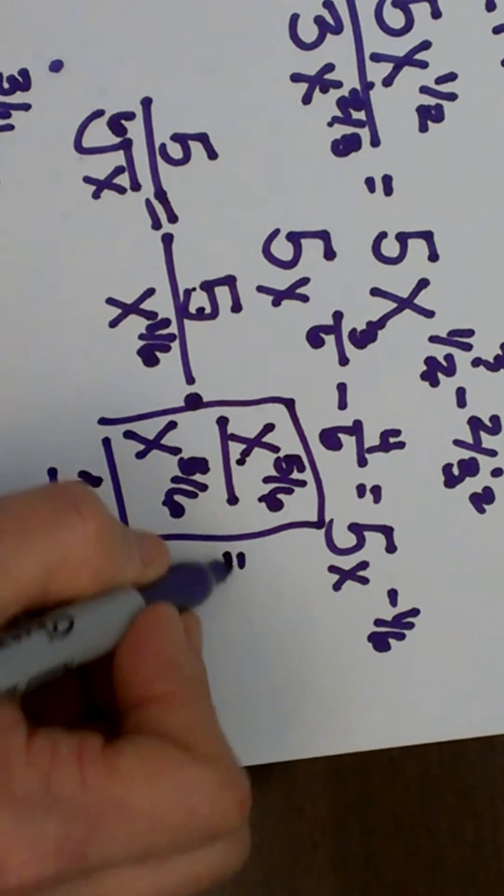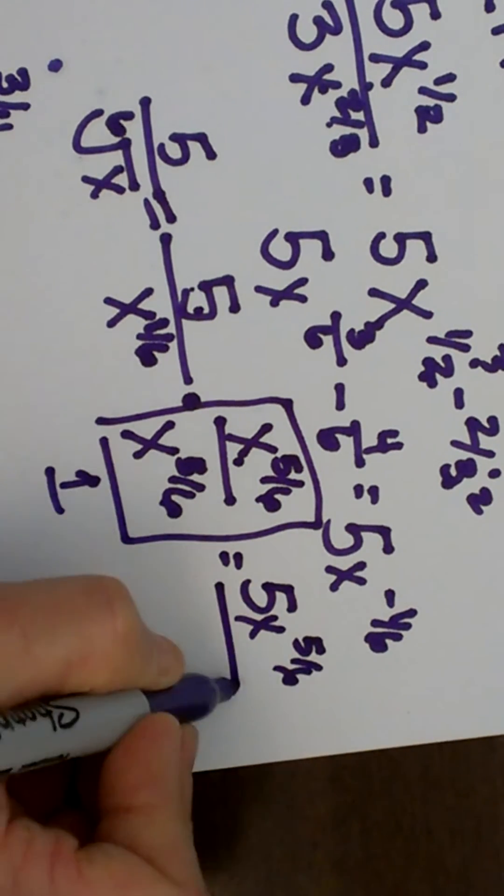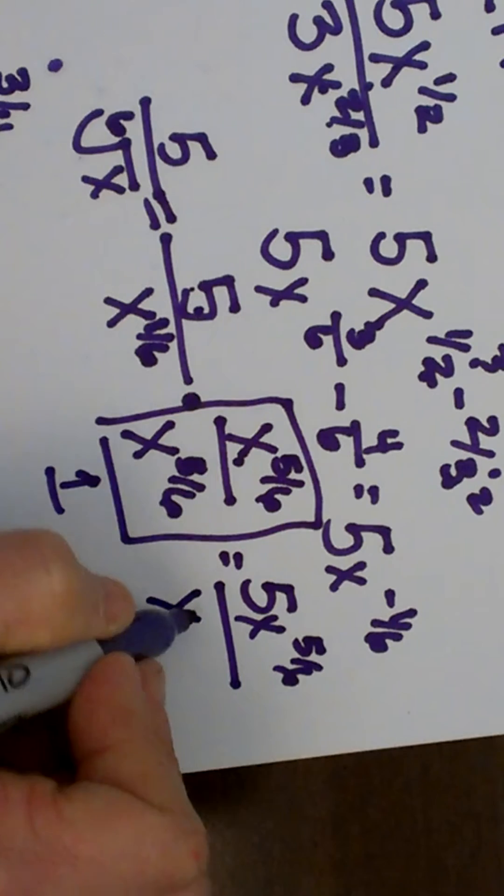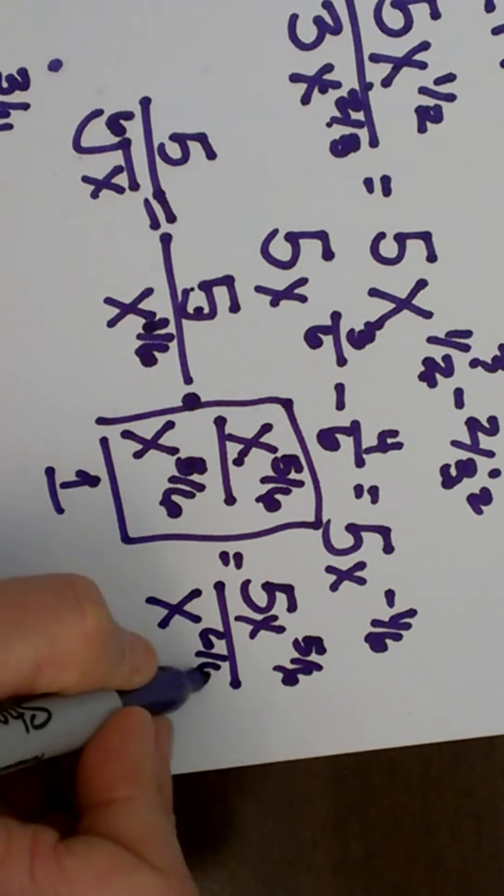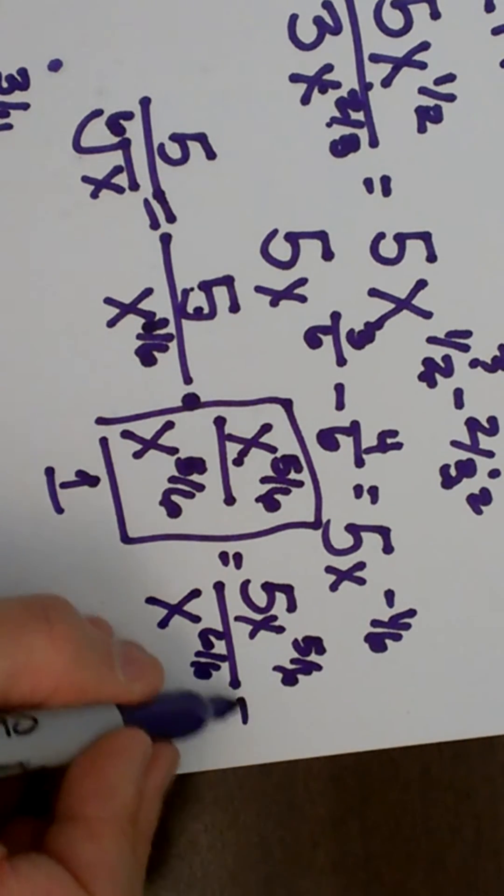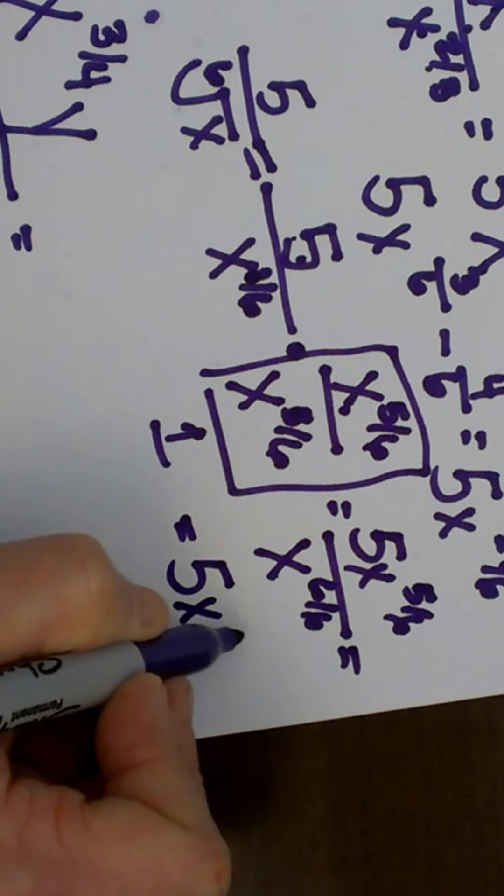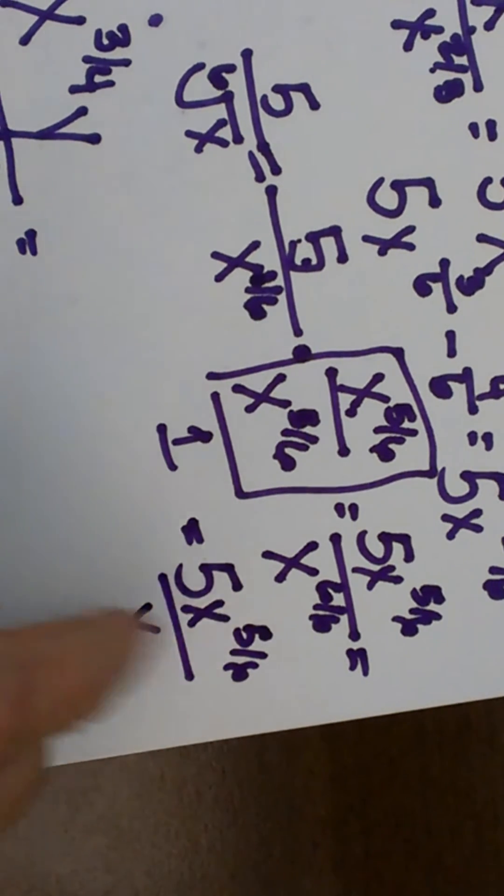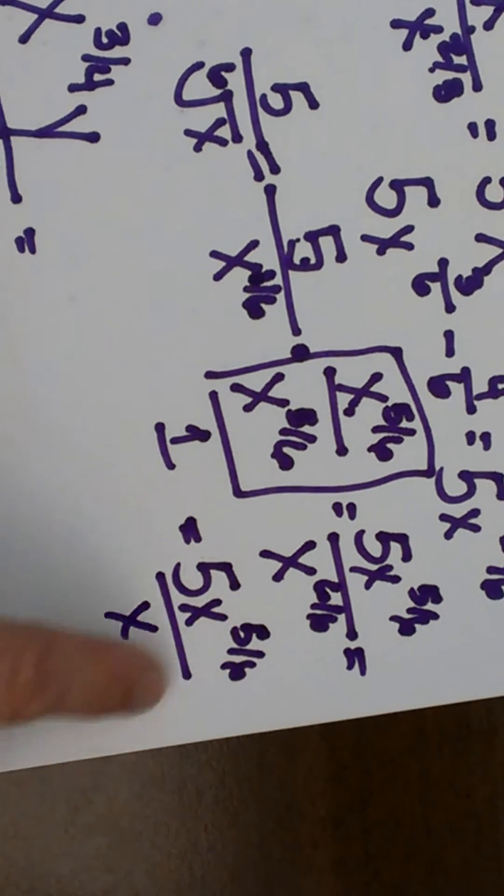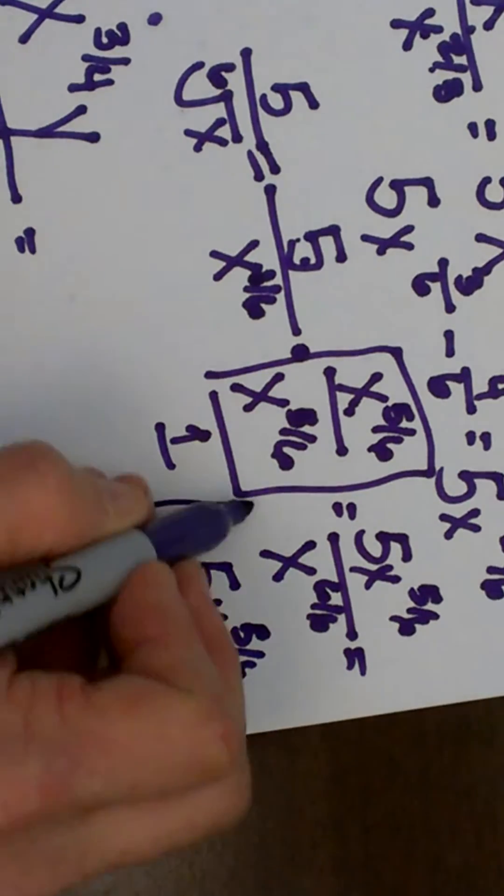So let's multiply these together. 5 times x to the 5/6 is just 5x to the 5/6, all over, and this is going to give me x to the, and I am multiplying now, so I am going to add my exponents, 6/6. We know 6/6 is 1, so this actually just simplifies to 5x to the 5/6 all over x. And no, we can't cancel those out, because we just cleaned it up, so we would have a whole x in the bottom instead of a fractional exponent.